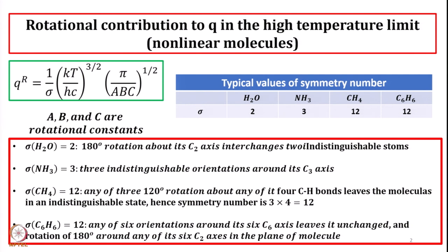We have discussed that for a non-linear rotor, we need to have the knowledge of A, B and C. And for a linear rotor, we need to have knowledge about B, the rotational constant. Rotational constant basically involves moment of inertia, and moment of inertia involves knowledge about the mass and the bond length. With this background, we will start discussing some numerical problems.